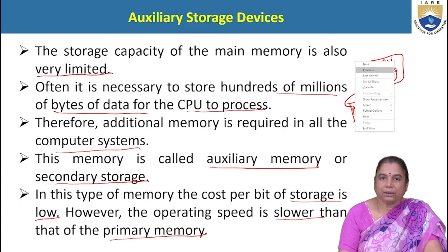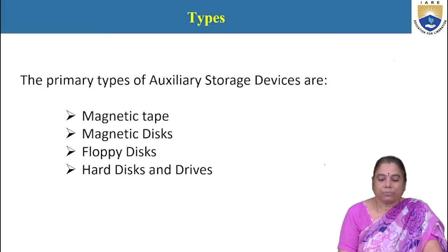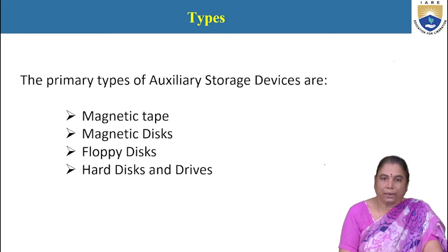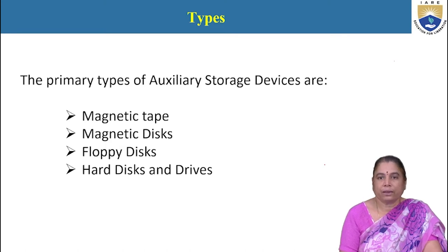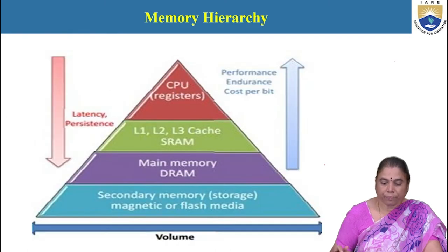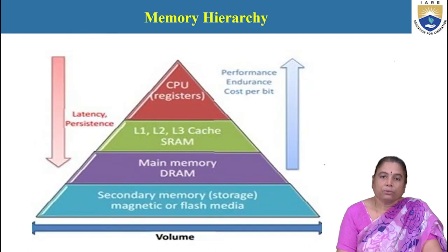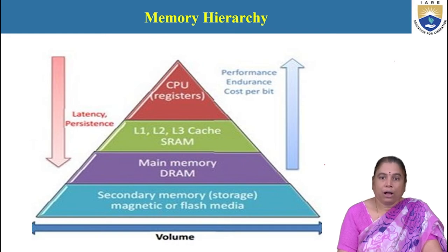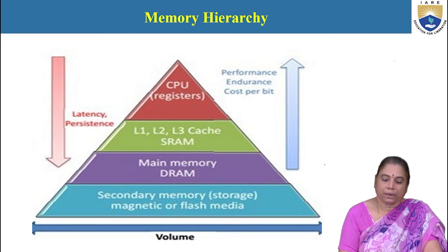What are the various types of auxiliary storage devices? Magnetic tapes, magnetic disks, floppy disks, hard disks, and drives are various varieties of secondary storage devices. These varieties of storage devices are arranged and specified with the help of the memory hierarchy.